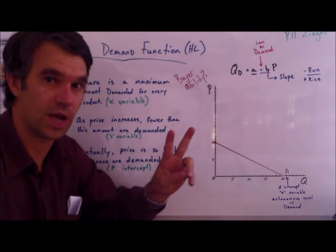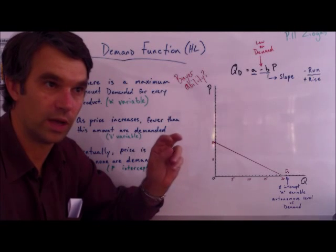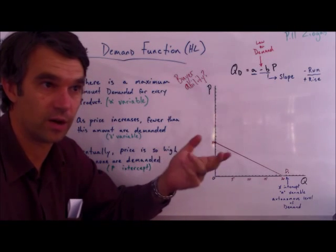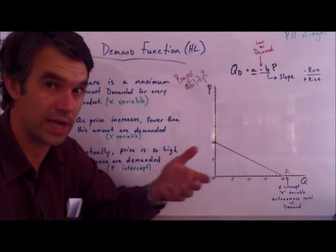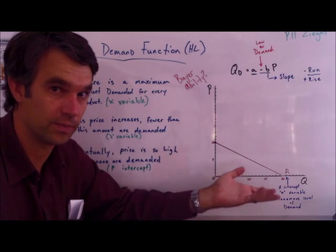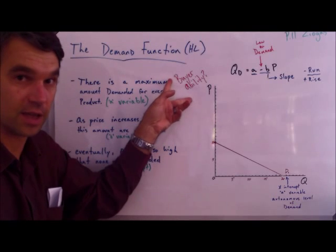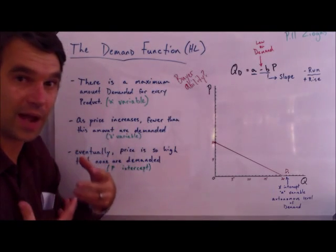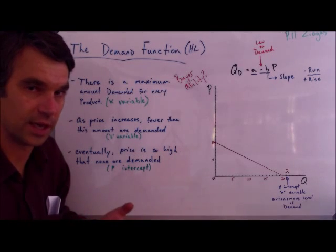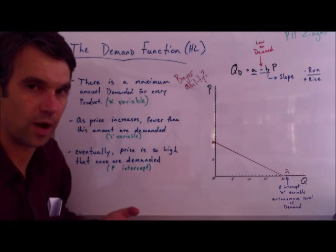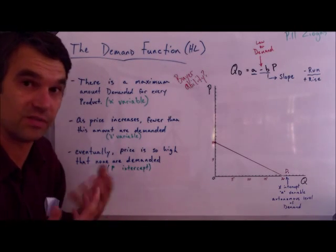The autonomous level of demand is the maximum amount demanded even if the price is zero. Remember when we talk about demand there are two concepts: buyer desire and buyer ability. If there's no price for a product, buyer ability is for the most part limitless — I can buy as many as I want if the price is zero. However, even though my buyer ability is infinite, my buyer desire is not. This is something we call the law of diminishing marginal utility, which we'll talk about more later on.